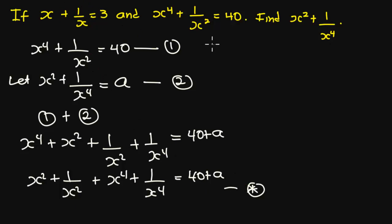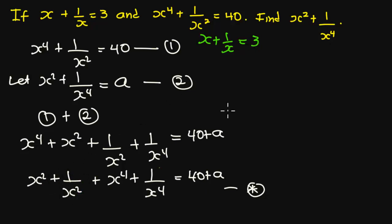From the question, we were given s plus 1 over s equal to 30. So we are going to derive s squared plus 1 over s squared from this equation, and then s to the power 4 plus 1 over s to the power 4 also from this same equation.